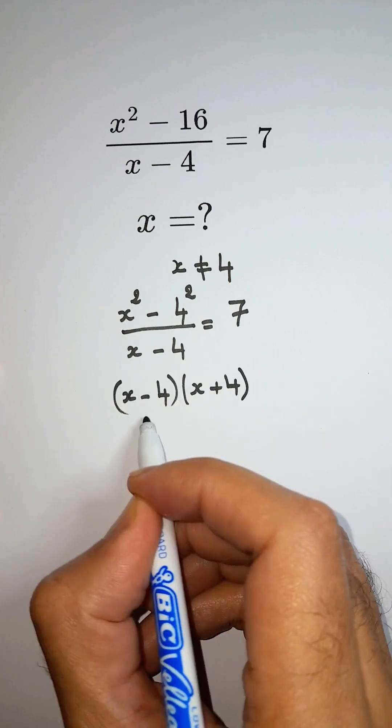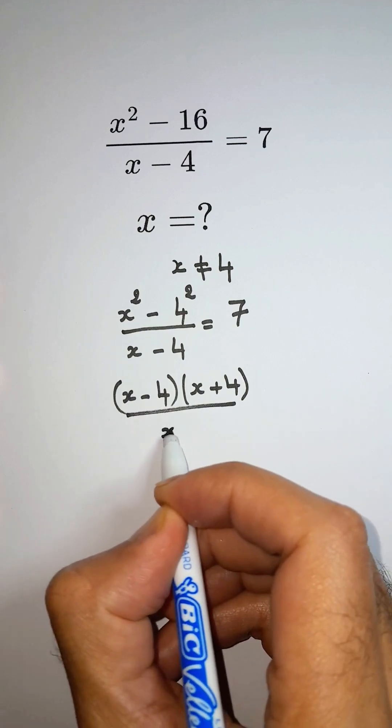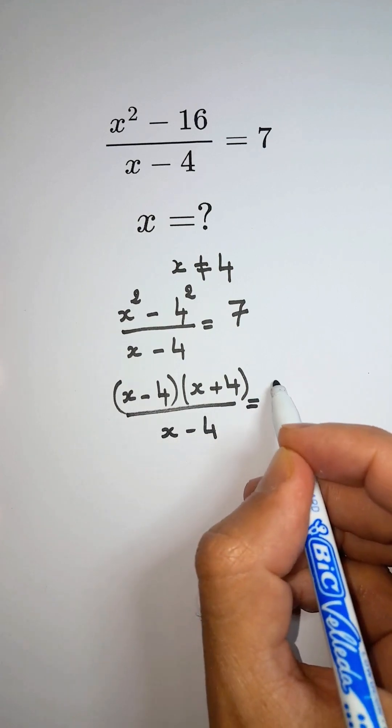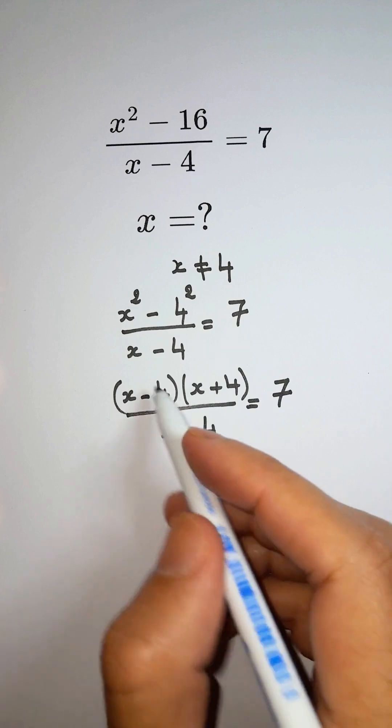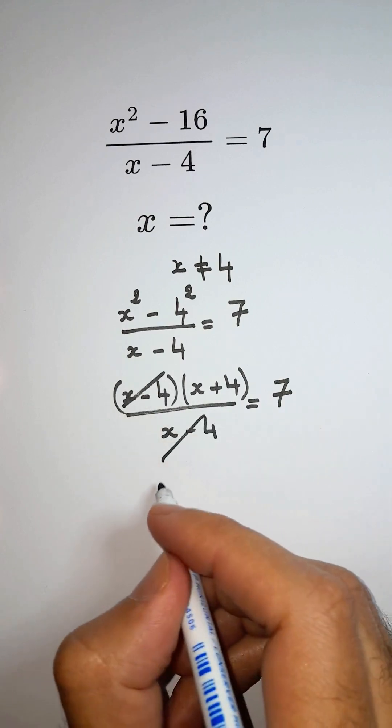Now the fraction becomes x minus 4 times x plus 4 divided by x minus 4. The matching x minus 4 cancels out.